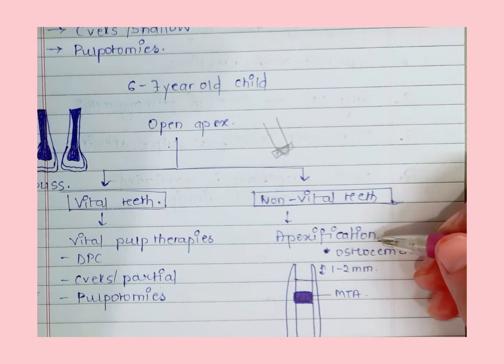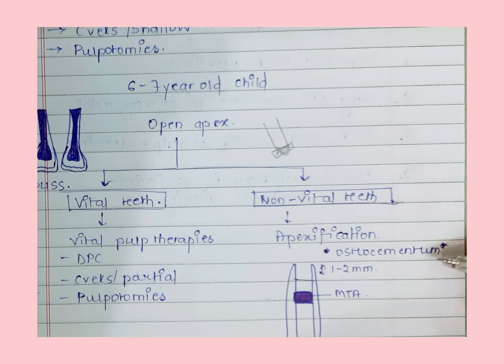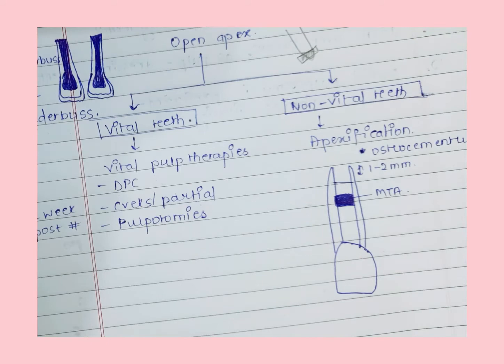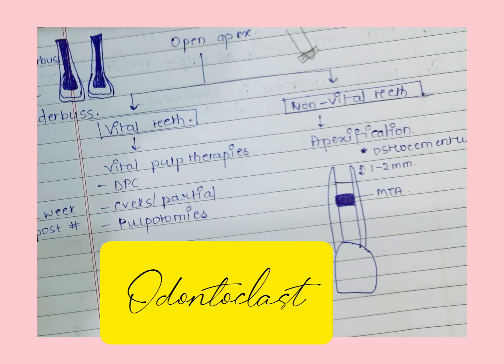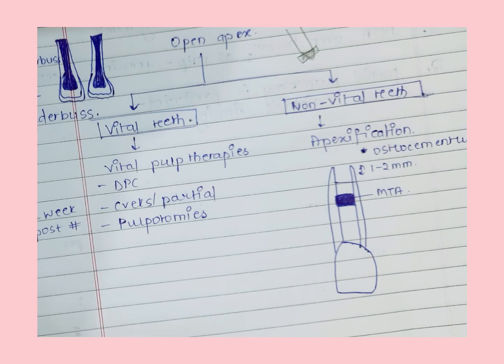We perform apexification using MTA, and after MTA placement an osteo-cementum-like mass forms. Another very important point: we perform direct pulp capping (DPC) in permanent teeth only, not in primary teeth. This is an examiner's favorite question — why not do DPC in primary or deciduous dentition. The reason is that undifferentiated cells are found in primary teeth, and calcium hydroxide causes differentiation of these cells into odontoclasts, leading to internal resorption.